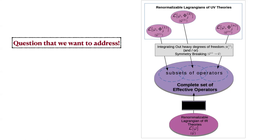Rather than doing individual model analyses, it would be a good idea to bring all theories down to a common platform described by the same degrees of freedom and the same symmetry — comparing apples to apples. From the bottom-up side, knowing the standard model as the low energy theory, we can construct a complete set of independent effective operators using group-invariant polynomial construction.